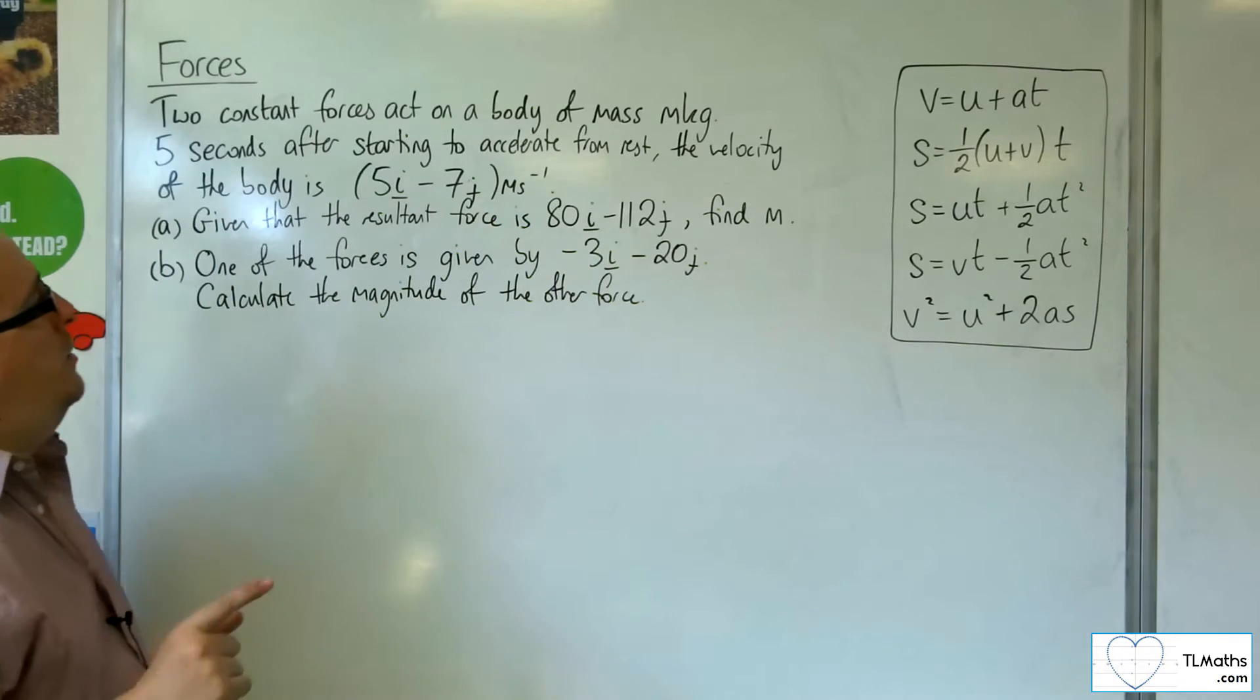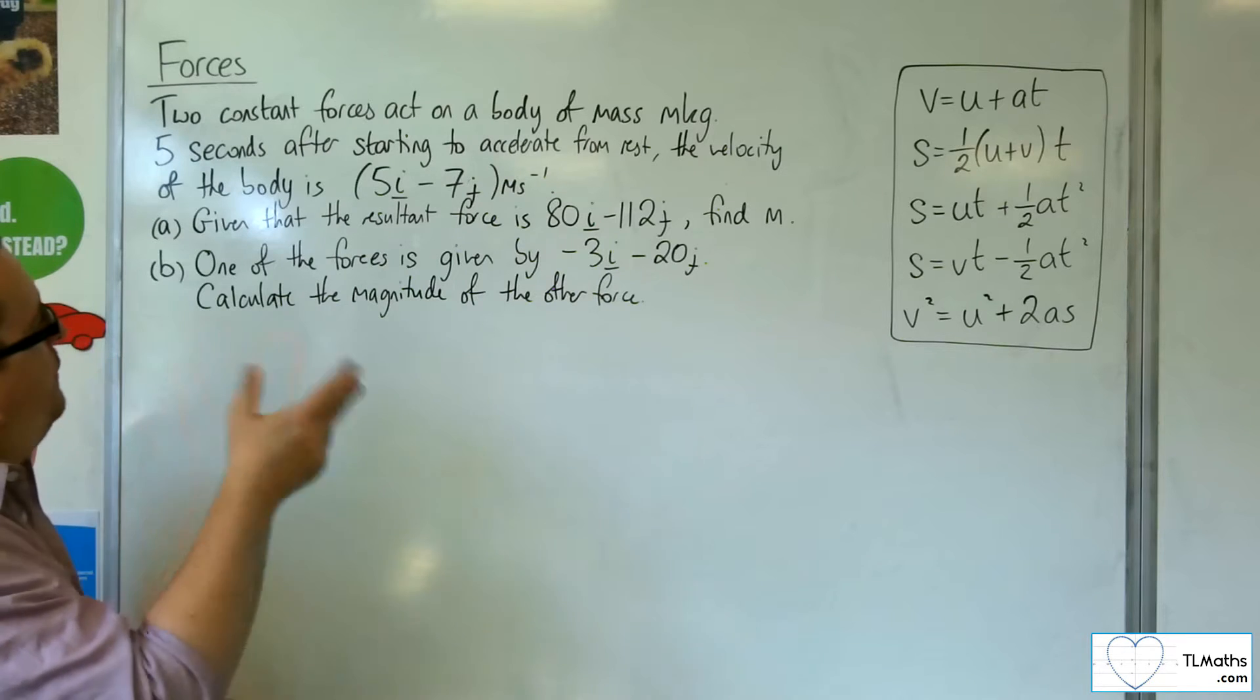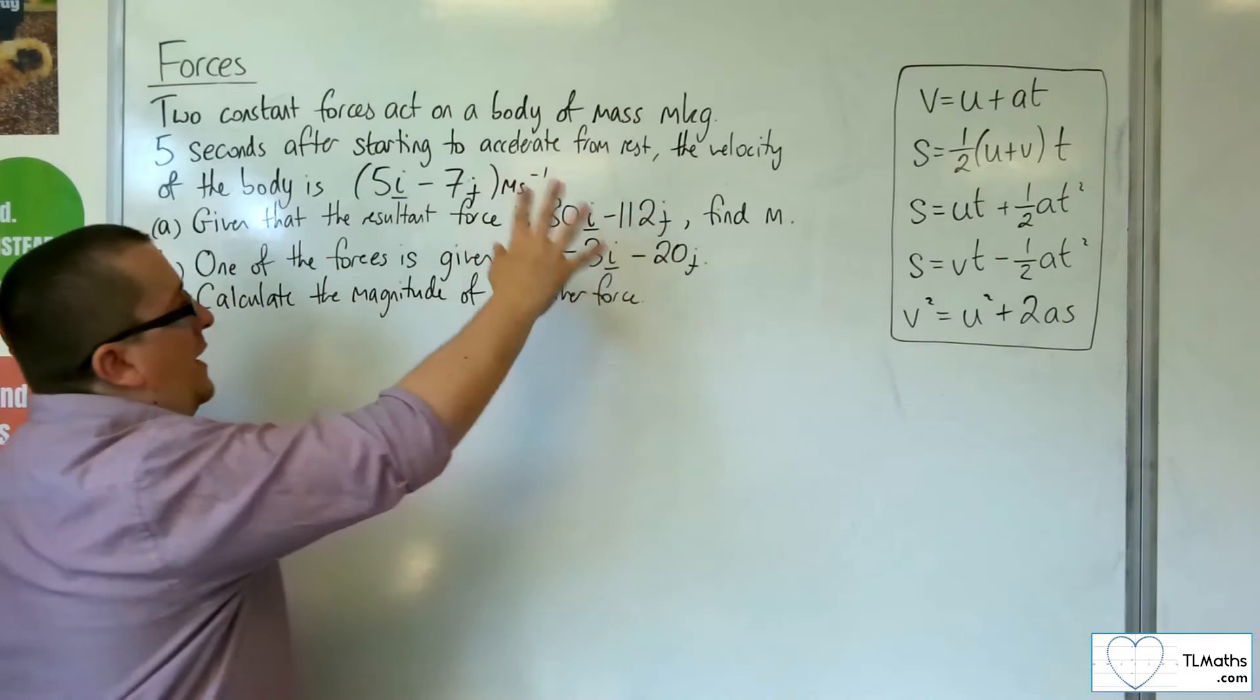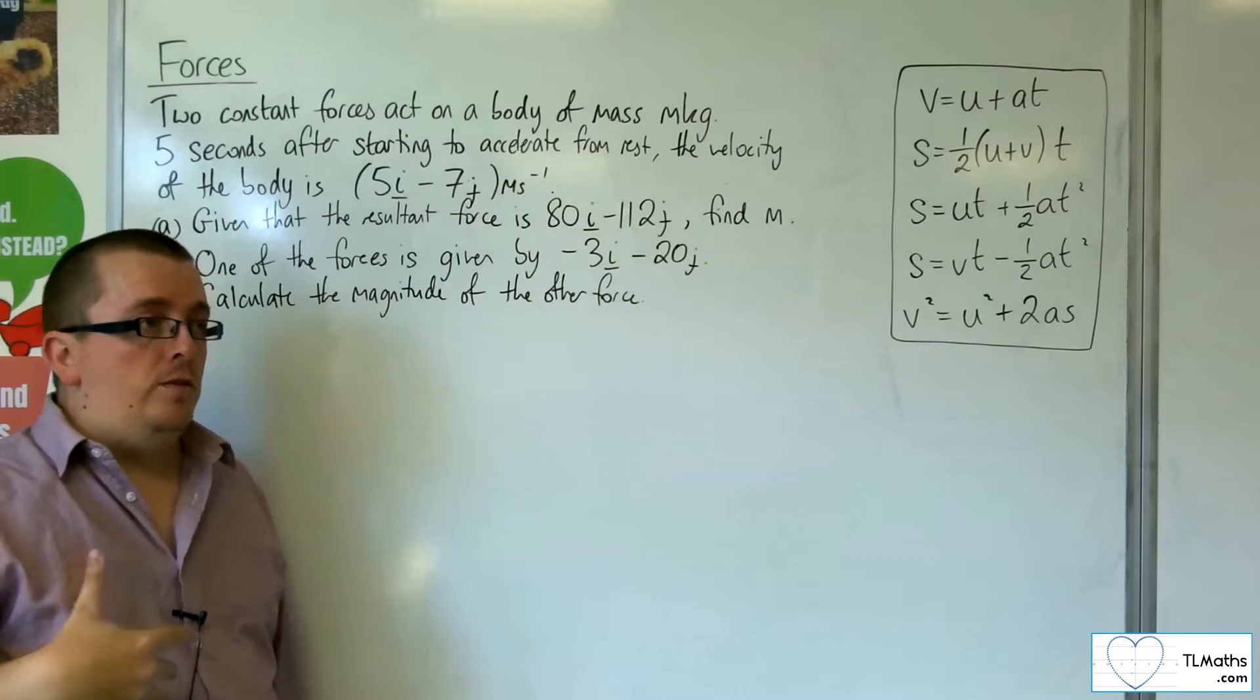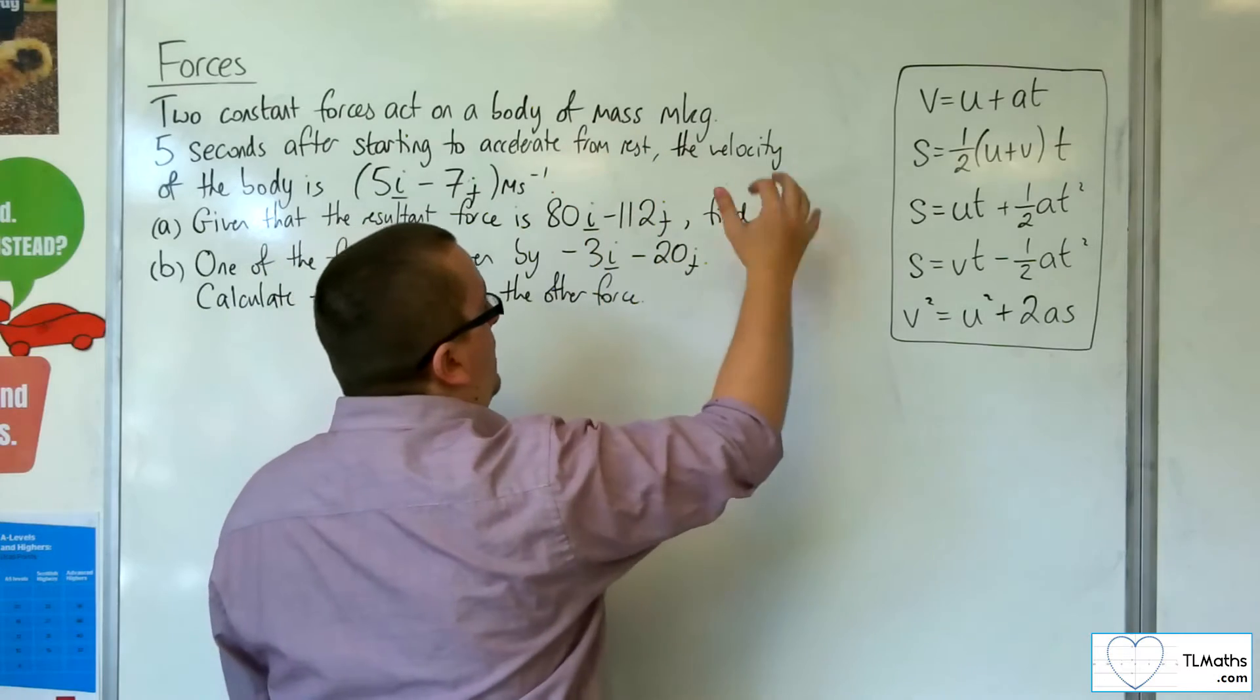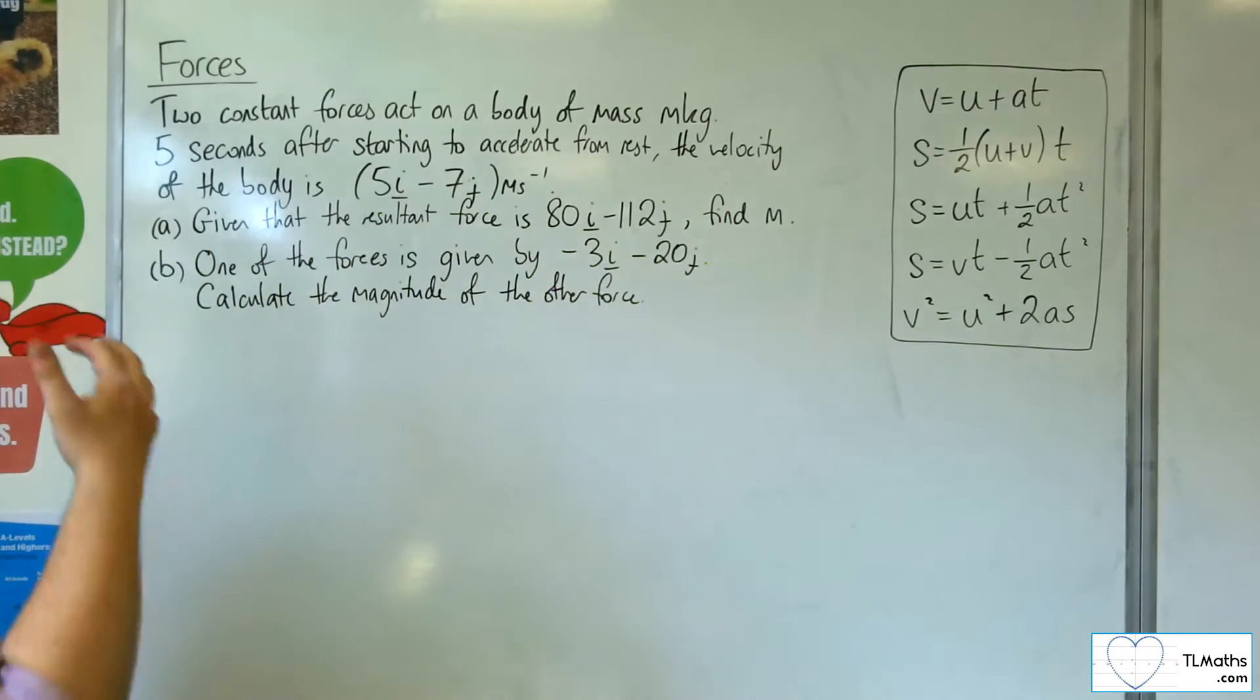So let's think about this. We've told the resultant force, that's the net force, that's going to be equal to mass times acceleration. So I really need the acceleration. If I have the acceleration vector, I can put that f equals m times the acceleration vector, and that will allow me to find out what m is.